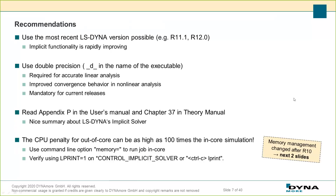Implicit has not always been in LS-DYNA and is still rapidly improving. The recommendation is always to use one of the most recent LS-DYNA versions possible, like R11.1, R11, or R12.0. It is now more or less mandatory to use the double precision version of LS-DYNA. Coming from the explicit side you may be used to single precision, but due to accuracy requirements we always recommend double precision to improve accuracy during linear equation solving and thereby improve convergence behavior.